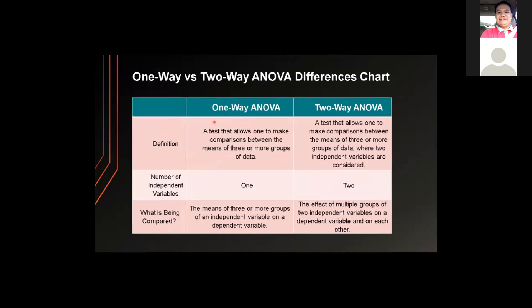The key differences between one-way and two-way ANOVA are summarized in a table. One-way ANOVA allows comparisons between means of three or more groups with one independent variable, while two-way ANOVA uses two independent variables. For one-way ANOVA, what is compared is the means of three or more groups of an independent variable on a dependent variable; for two-way ANOVA, it is the effect of multiple groups of two independent variables on a dependent variable and on each other.